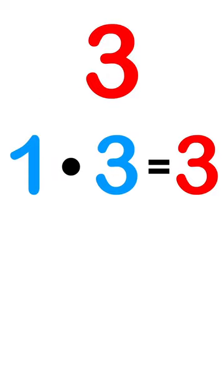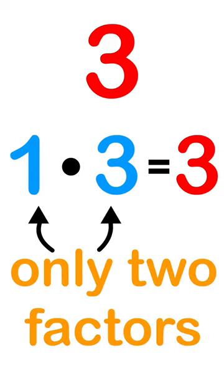3 has the factors of 1 and 3 because 1 times 3 equals 3. It only has 2 factors, therefore 3 is a prime number.